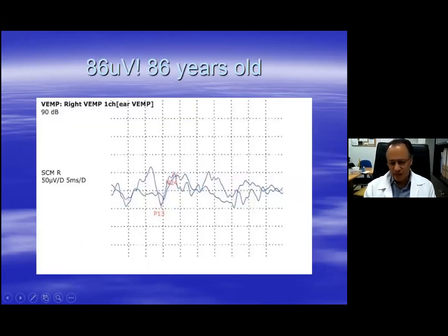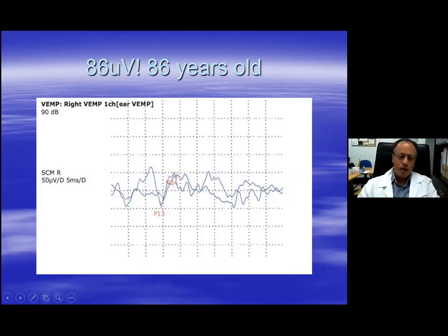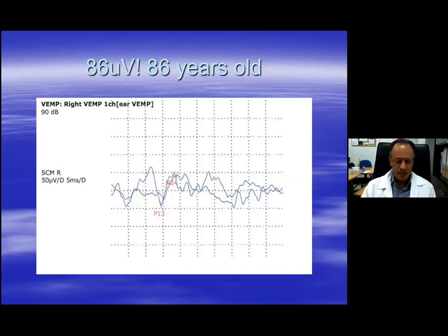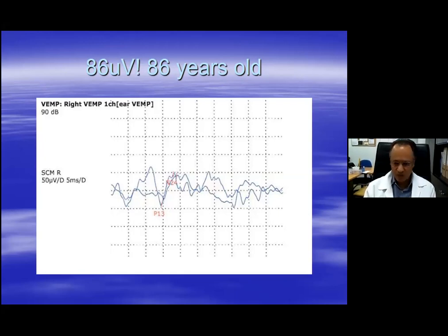I would like to first show you this slide with regards to recording from the elderly. As I mentioned in the first lecture, many reports in the literature advise those performing the test not to attempt to record in the elderly because there are many reports of unobtainable responses, either bilaterally or only on one side. The best way to record from the elderly is to record rectified average EMG.